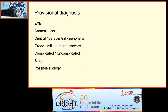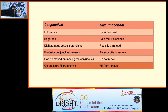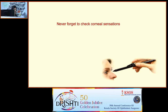For the provisional diagnosis, mention the eye, location, grade, whether complicated or uncomplicated, the stage, and the possible etiology. Additionally, know how to differentiate infective from sterile infiltrate — sterile infiltrate usually occurs in peripheral ulcerative keratitis. Be prepared to differentiate conjunctival versus circumcorneal congestion. Never forget to check corneal sensation — it is very, very important.